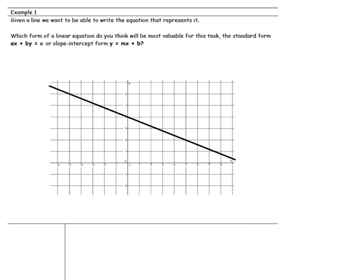Starting with Example 1. Given a line, we want to be able to write the equation that represents it. Which form of a linear equation do you think will be most valuable for this task? The standard form, ax plus by equals c, or slope-intercept form, y equals mx plus b? Actually, y equals mx plus b will be the most efficient.